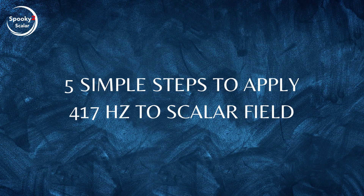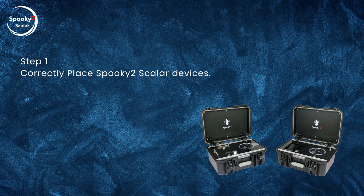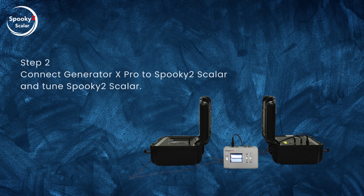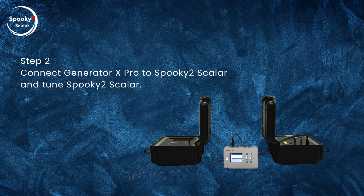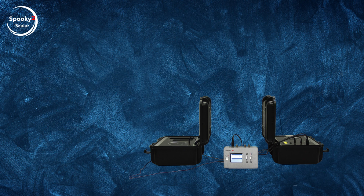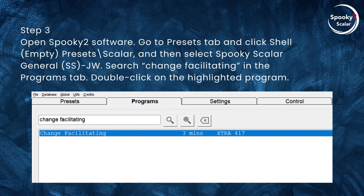5 simple steps to apply 417 Hz to Scalar Field. Step 1: Correctly place Spooky 2 Scalar devices. Step 2: Connect Generator X Pro to Spooky 2 Scalar and tune Spooky 2 Scalar. Step 3: Open Spooky 2 Software, go to the Presets tab, and click Shell > Empty Presets > Scalar, then select Spooky Scalar General.